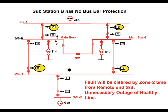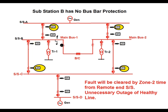The remote end feeder will sense this fault at zone 2 location. Zone 2 is normally given a time delay of 350 to 500 milliseconds, so this fault will be cleared from the remote end feeder at zone 2 time. All feeders connected to the substation will trip from the remote end substation under zone 2 time. Due to absence of bus bar protection, all feeders connected to main bus 1 and main bus 2 will be tripped from zone 2, causing unnecessary outage of healthy feeders and outage of transformer 2.